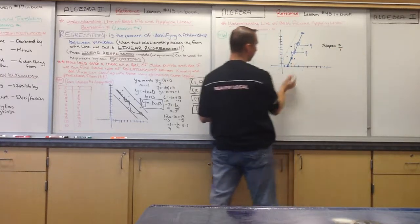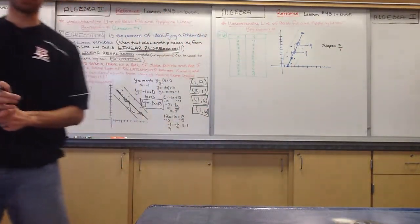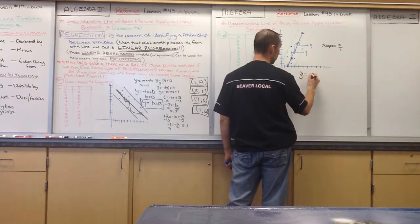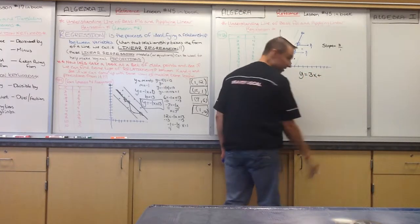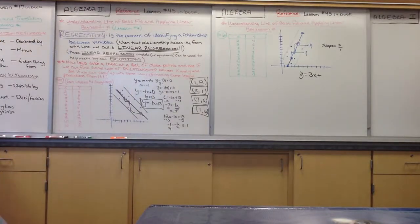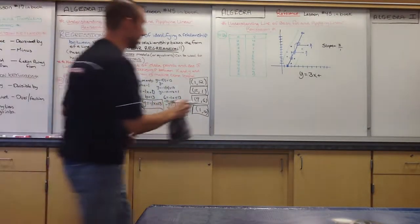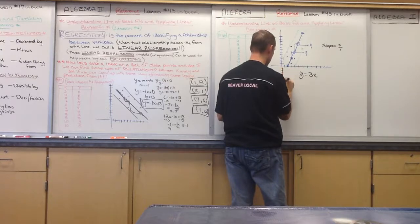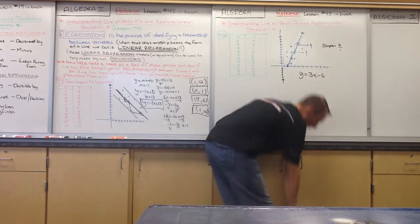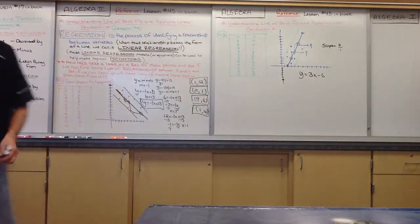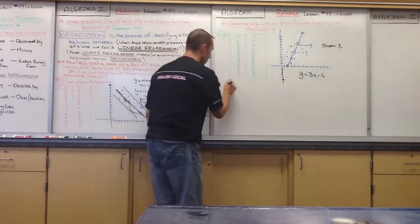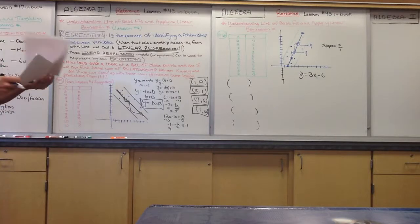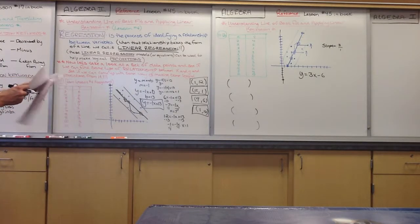My slope is three over one. I can figure out my y-intercept by continuing the slope down until I hit my y-axis. So my equation is y equals 3x plus or minus something — and the y-intercept is minus six. Counting down: one, two, three, four, five, six — right here is my y-intercept. So the line of best fit is y equals 3x minus 6. Now we can use this as a predictor for the coordinate points given.